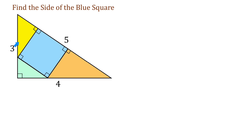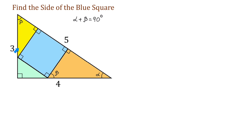Now, in our large triangle, let the angle opposite the shorter side be angle alpha, then the other one will be beta. Because this is a right triangle, the sum of alpha and beta equals 90 degrees. Looking at the orange triangle: this triangle is a right triangle, and if this angle is alpha, then the other one has to be beta. The yellow triangle is also a right triangle, and if this angle is beta, then this one has to be alpha.